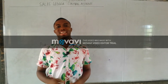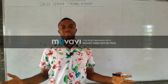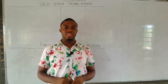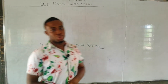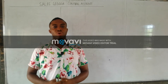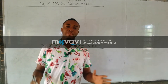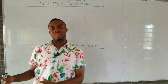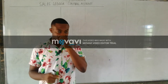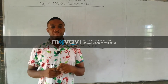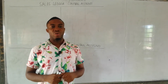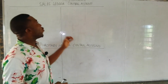Welcome to my channel. This is the King's Tutor. If you're joining us for the first time, kindly subscribe, like, comment, and share this video. In our previous class we covered control accounts — the introduction and format — and we saw the two types: the sales ledger and the purchases ledger. If you haven't seen that video, I recommend you check the link below before continuing.